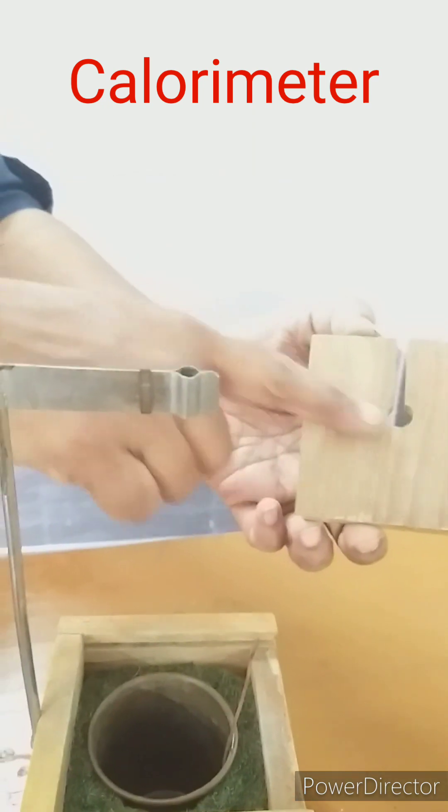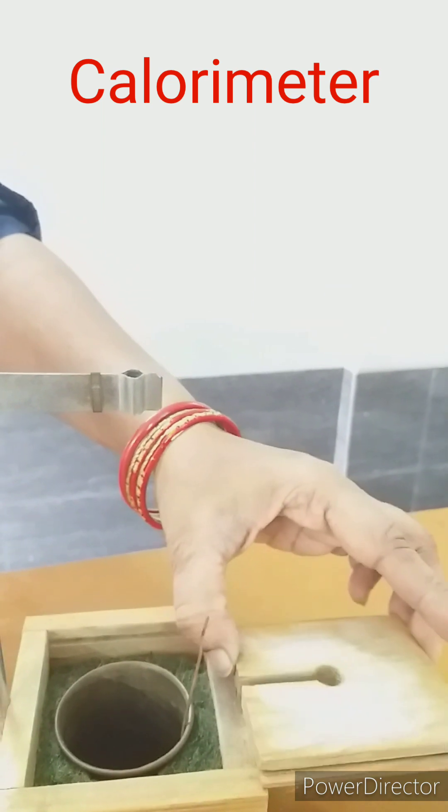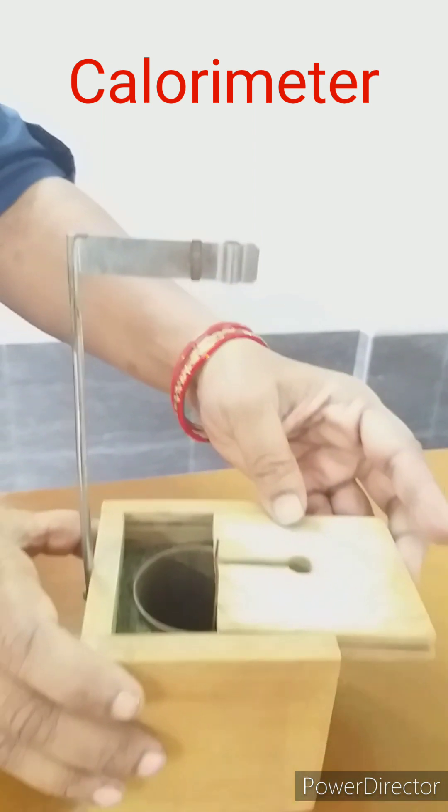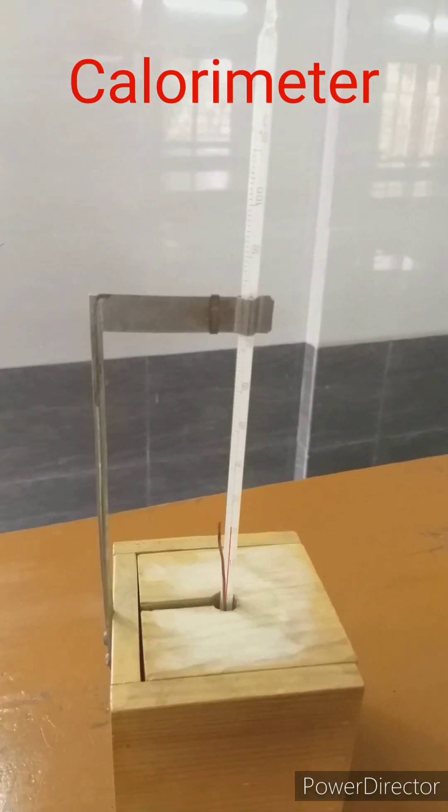This is a wooden lid. The wooden lid is used to prevent heat loss by convection. Now let's do it.